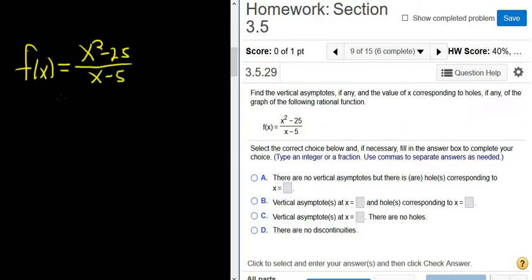So first we look for holes. Holes occur when we have cancellation. So we can factor the numerator as x plus 5, x minus 5, over x minus 5. And now we have cancellation, so this is equal to x plus 5.